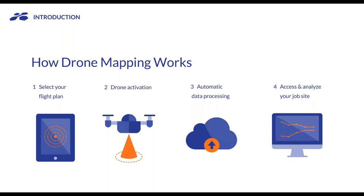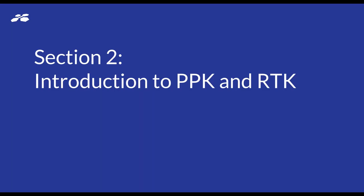The general drone mapping process for a fully managed solution: you select your flight plan, activate the drone, it takes off, flies in a lawnmower pattern capturing all the data, comes back, and lands itself. The data is automatically processed into useful three-dimensional progress reports, and you can access and analyze your job site to get the insights you need. In general, you can capture around 100 acres in 10 minutes, get the data back in hours — often the same day.